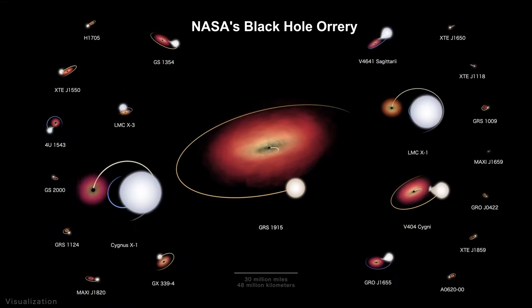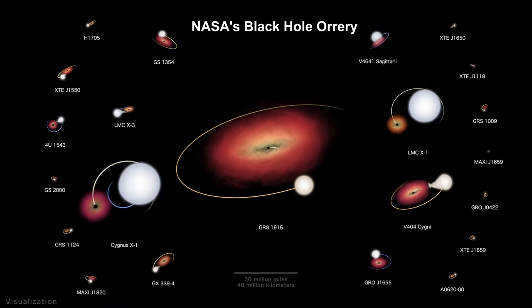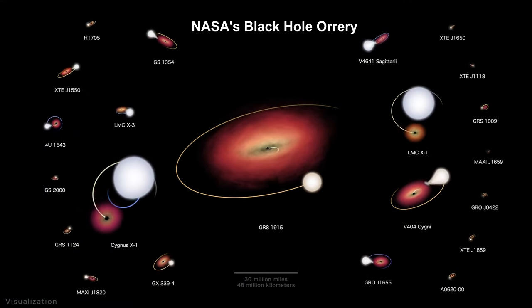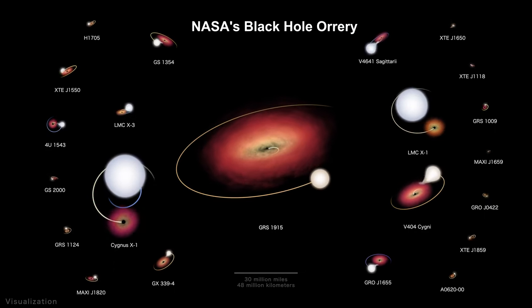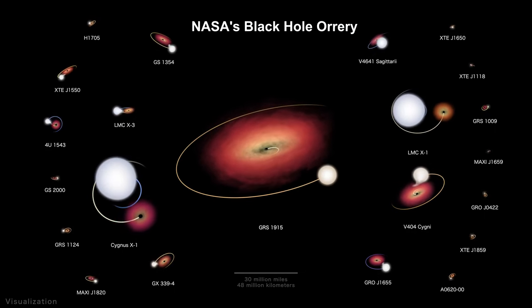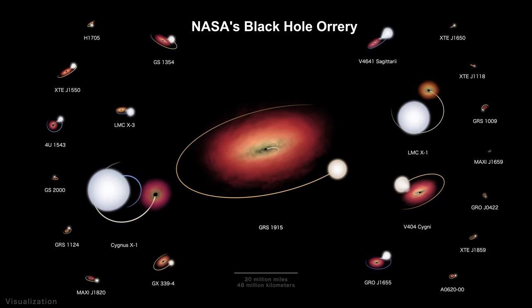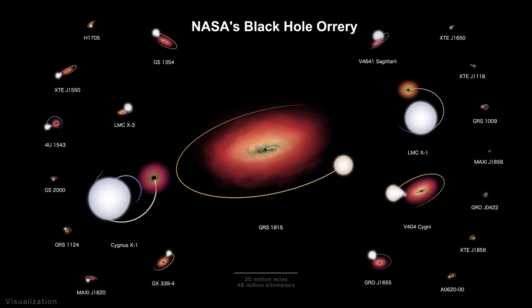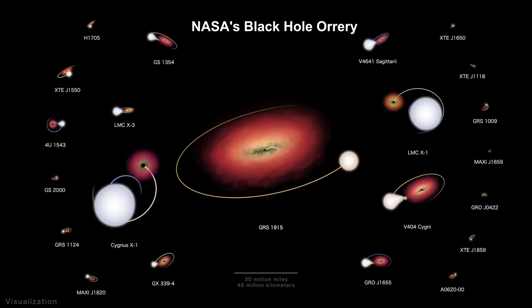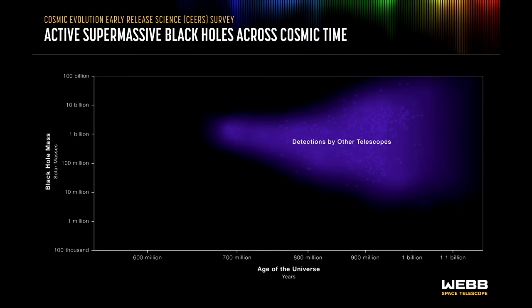In this segment, we'll cover how black holes are categorized and how they form. We'll cover their structure and the various ways they grow. We'll cover the first image of a black hole ever recorded. We'll cover examples from nearby black holes in our own galaxy to the most distant black hole ever discovered. And we'll end with coverage of a new theory for how the first black holes may have formed.